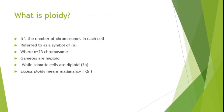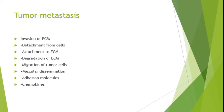Ploidy refers to the number of chromosomes in each cell, represented as n, where n equals 23 chromosomes. Gametes are haploid (1n), while somatic cells are diploid (2n). Excess ploidy — 3n, 4n, 5n up to 9n — indicates malignancy. Variation in ploidy between cells (polyploidy) reflects the aggressiveness of the tumor.